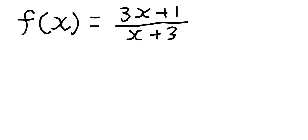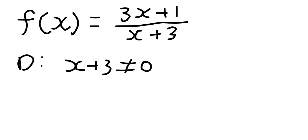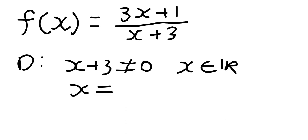The first thing we're going to do is identify the domain. The domain requires that x + 3 cannot be equal to 0, and otherwise x is a real number. We know that x + 3 can't equal 0 because if it was, we would be dividing by 0, which is not defined. So that means x is not equal to negative 3.